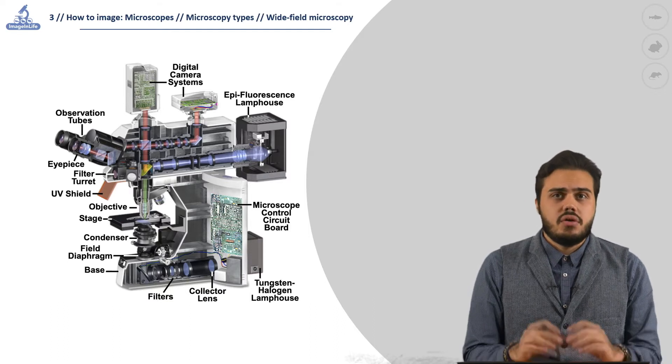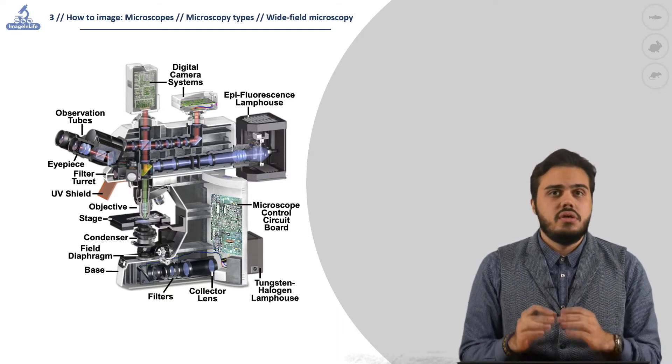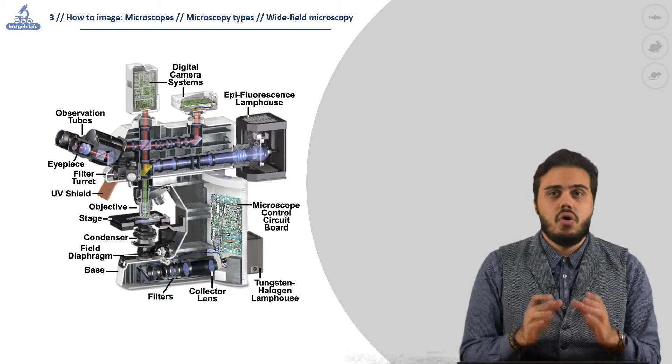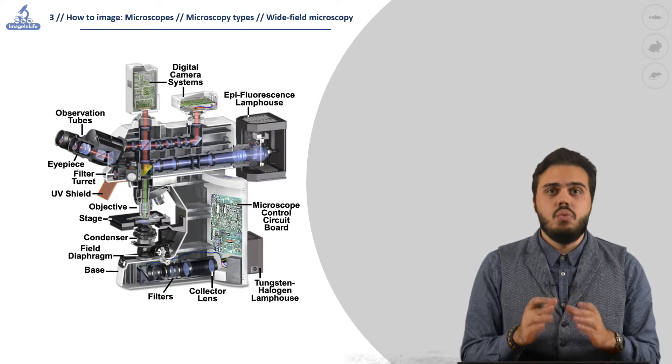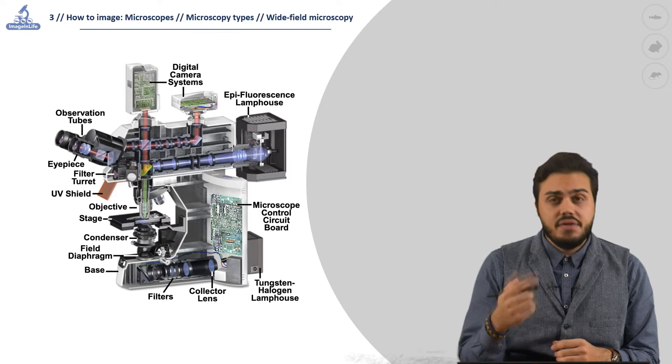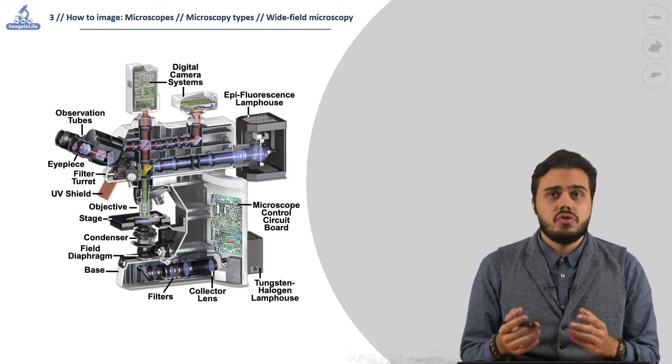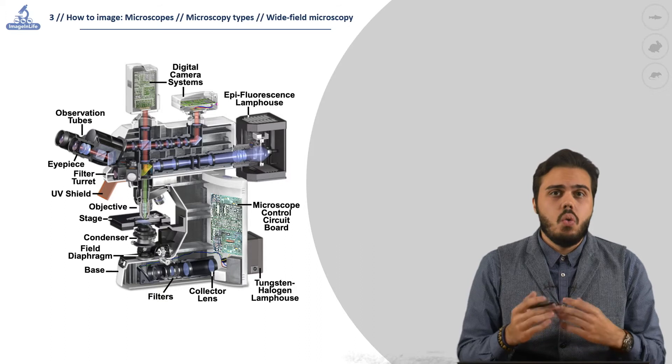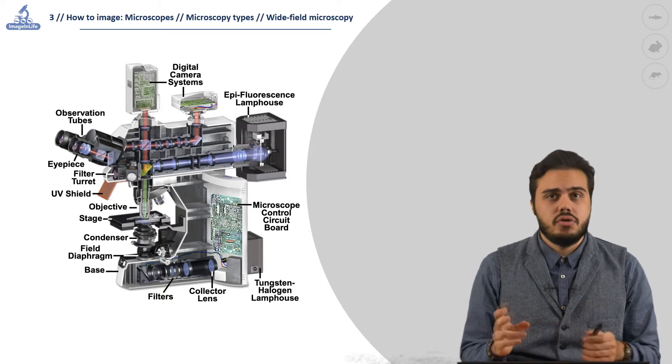This means that contrary to confocal microscopy, we cannot easily decide which part or section of the specimen we want to observe. Later we will introduce fluorescent microscopy briefly to have a complete outlook of what we can do with wide-field microscopy.